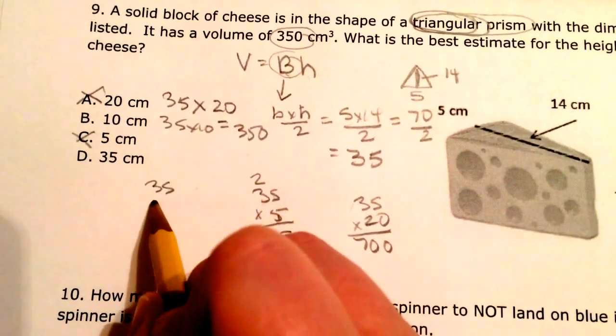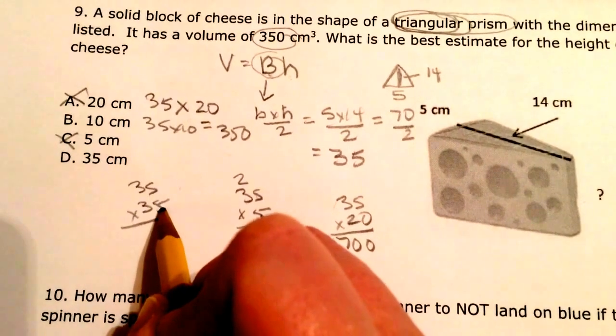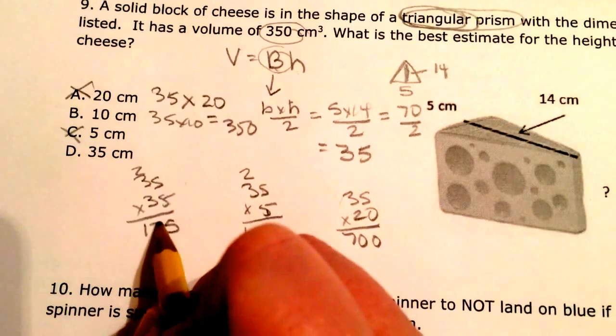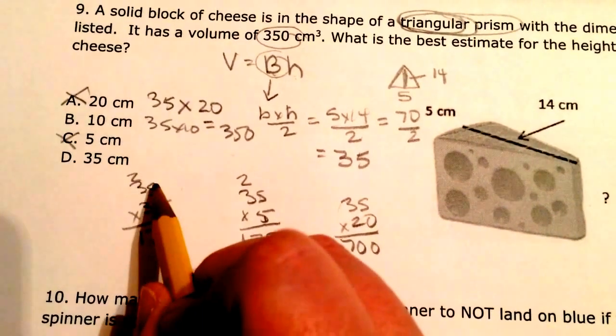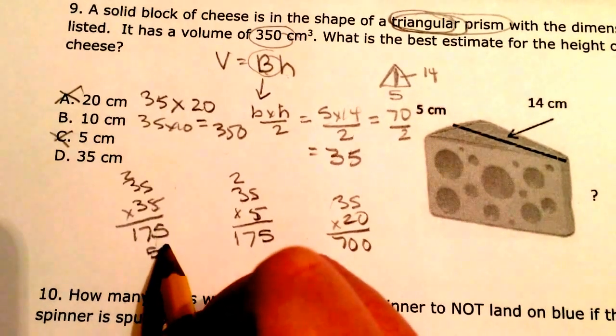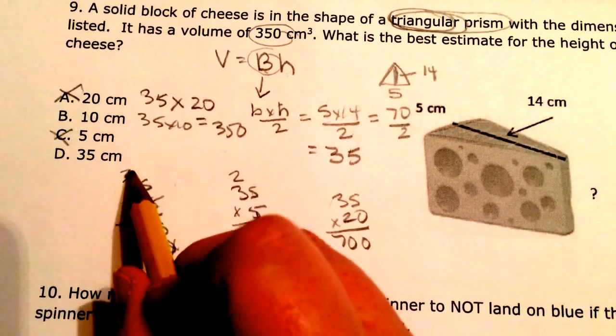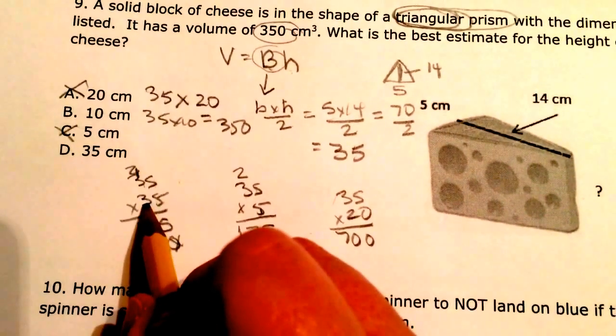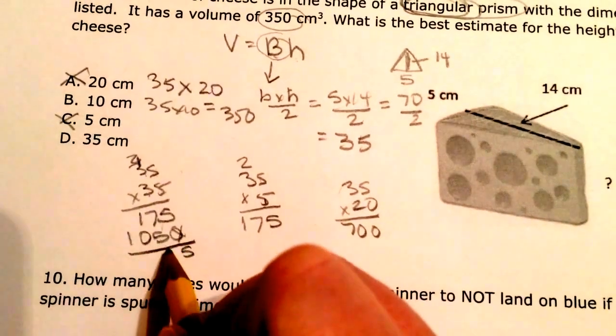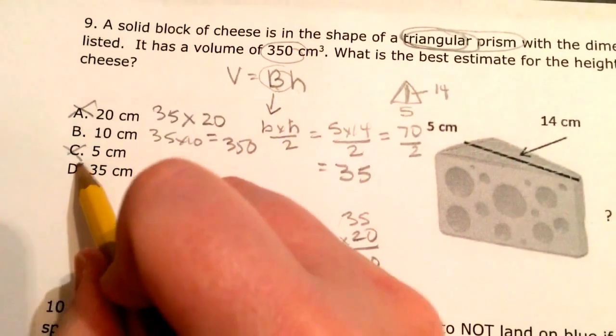And then 35, so 35 times 35. 5 times 5 is 25. Carry my 2. 3 times 5 is 15. Plus 2 is 17. Okay. 3 times 5 is 15. And it's got to go under the 3 because that's what I'm multiplying by. 3 times 5 is 15. Carry my 1. 3 times 3 is 9. Plus 1 is 10. 5, 12. Carry my 1. 2, 1. Nope. That's not 350 either.